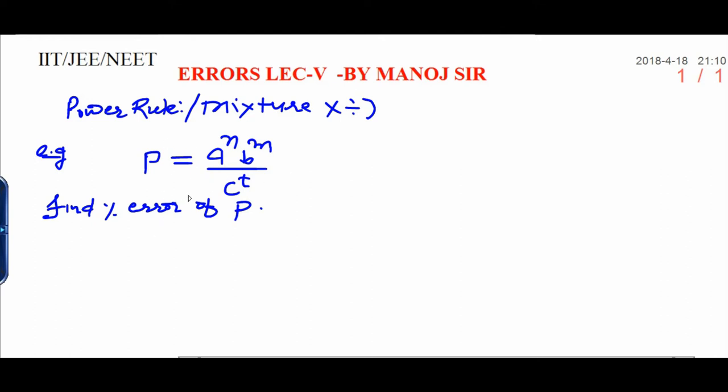Here, all are dependent quantities. In order to separate them, you need to take the log both sides. Taking log both sides, I can write log P is equal to n log a plus m log b plus t log c.